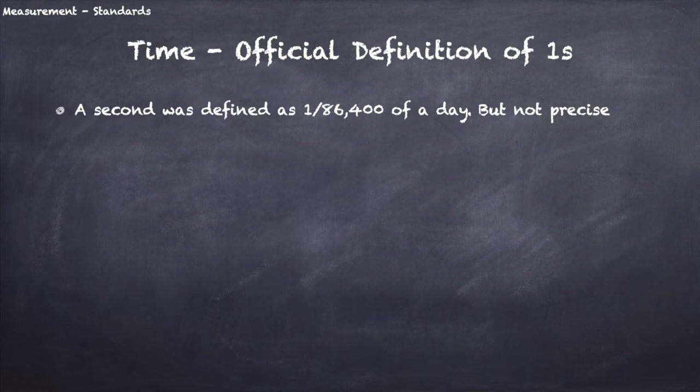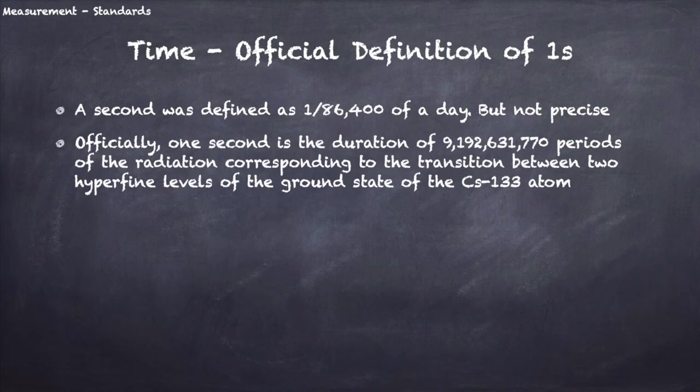Today, one second is the duration of 9,192,631,770 periods of the radiation corresponding to the transition between two hyperfine levels of the ground states of cesium-133 atom. Now you're probably thinking the krypton 86 meter definition actually wasn't too bad. Anyway, let's break this definition down and understand it.